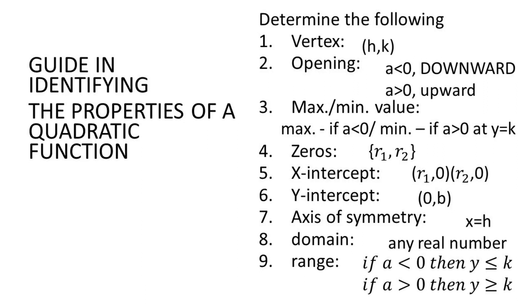Let's have a guide in identifying the properties of a quadratic function. The vertex of a quadratic function is (H, K). To identify the opening: if a is less than 0, that is downward; if a is greater than 0, it is upward. For maximum or minimum value: maximum if a is less than 0, minimum if a is greater than 0, at Y equal to K.